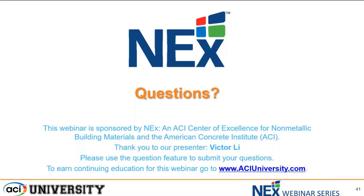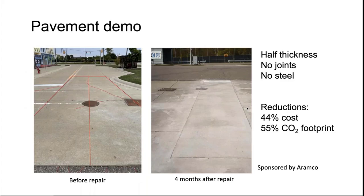To clarify: even the initial installed cost can be lower. The pavement has only half the thickness of normal concrete pavement, so for a given area you are using half the amount of material. In the pavement example, the install cost turns out to be only 44 percent of normal steel reinforced concrete pavement at full thickness. In the long run, the material's durability also reduces operational cost and operational carbon.